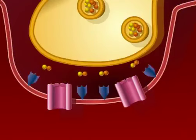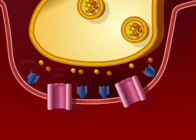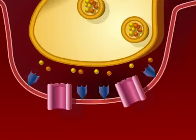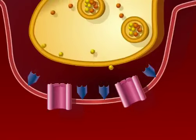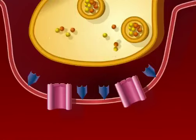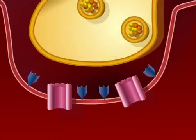Acetylcholine is rapidly broken down to acetic acid and choline in the synaptic cleft by the enzyme acetylcholinesterase. The choline is reabsorbed by the presynaptic terminal and combined with acetic acid to form more acetylcholine, which enters the synaptic vesicles.